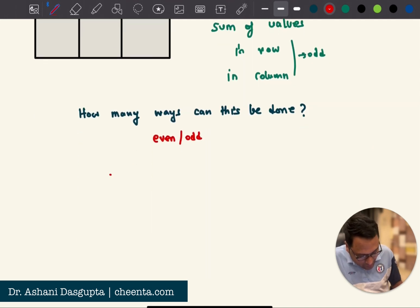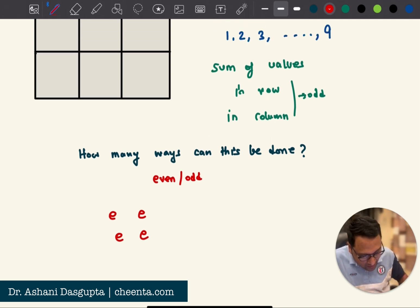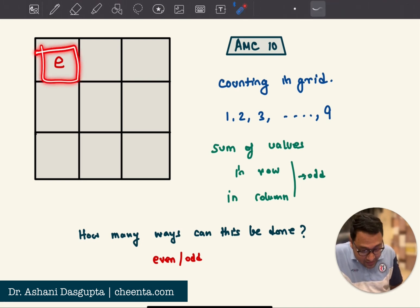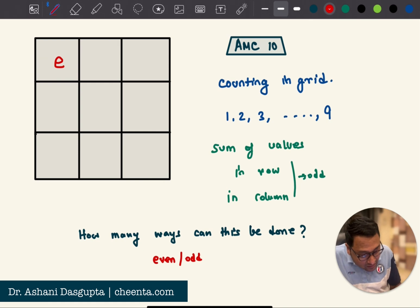Let's name them E, E, E, E. So we want to insert the four even numbers first. So how do we do it? So suppose we have an even number in this particular box, in this box. Then there must be another even number in the same row.